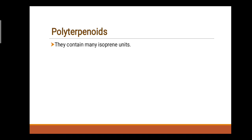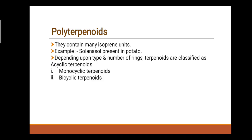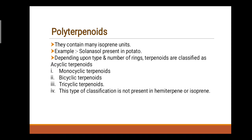Sixth class: Polyterpenoids. They contain many isoprene units. For example, Solanesol present in potato. Depending upon the type and number of rings, terpenoids are further classified as: acyclic terpenoids, monocyclic terpenoids, bicyclic terpenoids, and tricyclic terpenoids. This type of ring-based classification is not applicable to hemiterpenes or isoprene.